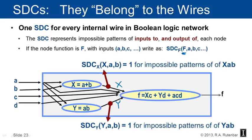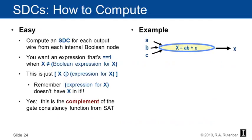We sort of know what they are, and we stared at the Boolean network in the previous lecture and figured out how to do it by eye. What we need is a computational recipe for extracting this. What's amazing is that it's actually easy. To compute the satisfiability don't care for an output wire of a node, you want a Boolean expression that's equal to one when X is not equal to the Boolean equation for X. That's just X exclusive-OR the Boolean expression for X. Note that the Boolean expression for X doesn't have any X's in it — it's the right-hand side of the equal sign. This is in fact the complement of the gate consistency function from the SAT material a couple of lectures ago.